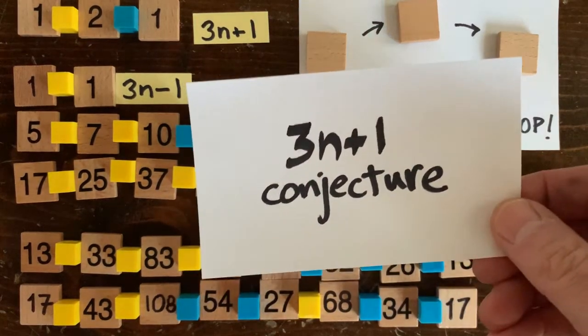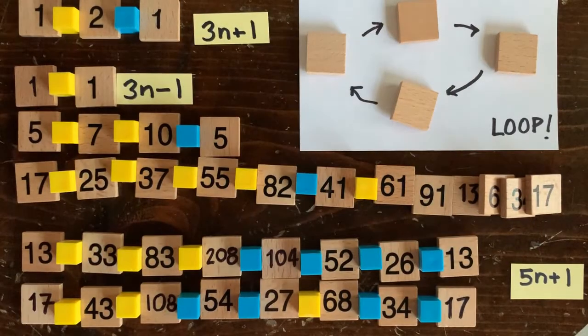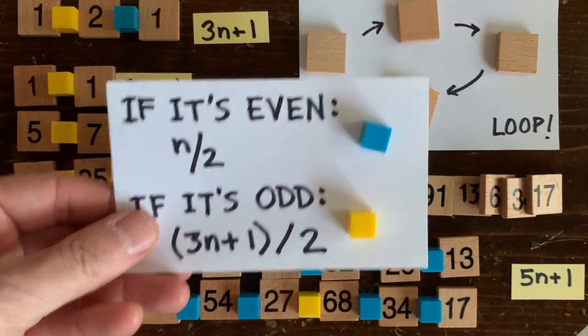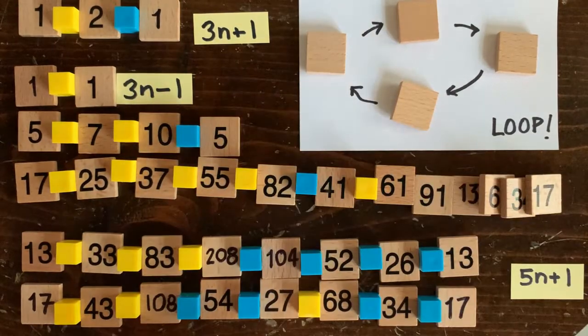Welcome back to the 3n plus 1 problem. Start with any number. If it's even, cut it in half. If it's odd, multiply by 3 and add 1 and divide by 2. Then repeat. The conjecture states that every number goes to 1.